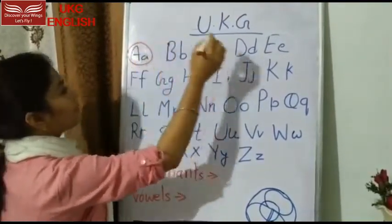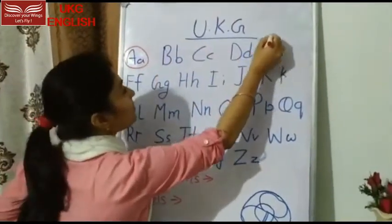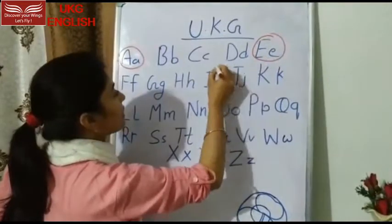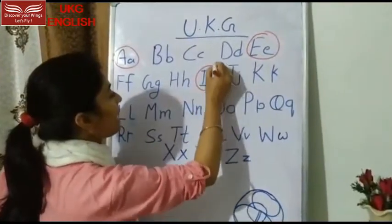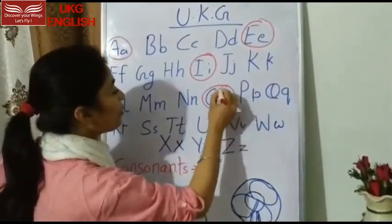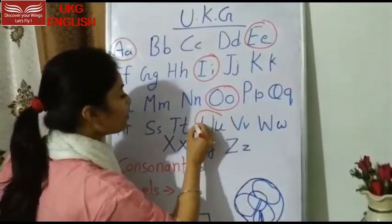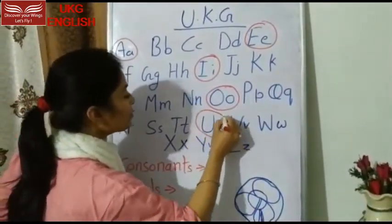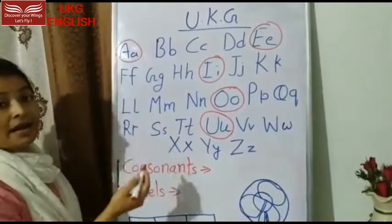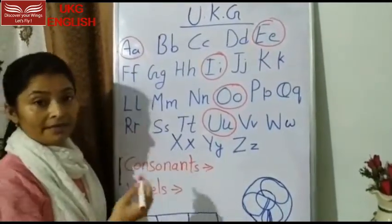A, E, I, O, U — these are the five vowels.